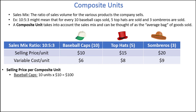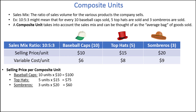For top hats, there are 5 hats in a composite unit and the selling price is $15 each, so 5 units times $15 is equal to $75. Hopefully you can confirm that by using the same process, the sombreros contribute $60 to the composite unit selling price. To find the selling price per composite unit, just add the three numbers together: 100 plus 75 plus 60 equals $235 selling price per composite unit.